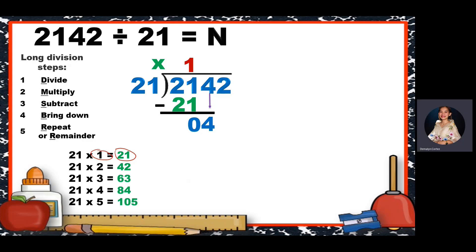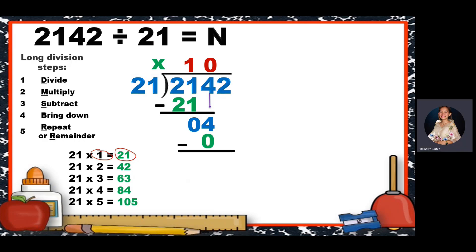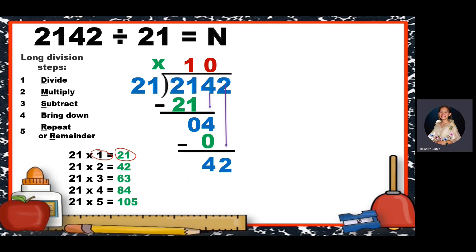4 divided by 21: how many 21s are there in 4? In our skip counting, we cannot see 4 — the lowest is 21. So there's no 21 in 4; we put 0. When the dividend is smaller than the divisor, we just put 0 here. Then 0 times 21 is 0. Subtract, so we still have 4. Bring down 2 — now the new dividend is 42.